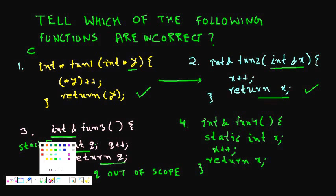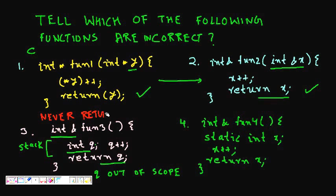So similarly, but what can we do? This one, let's see: int ampersand function four, static int x, x plus plus, return x. So I am returning reference - is this correct? Again you will say that this variable is being created inside the function, but see this keyword static. So it makes it basically out of this - this is not the same as scope of this function. It remains even after returning from the function because of the static keyword, and so this is also fine.